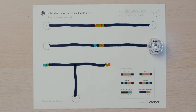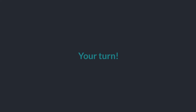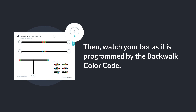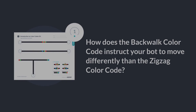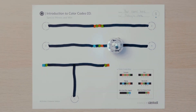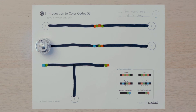You are ready for the final special move. Put your bot on start number four and observe how it uses its line sensor to follow the pathway and its color sensor to process the back walk color code. Then watch your bot as it is programmed by the back walk color code. How does the back walk color code instruct your bot to move differently than the zigzag color code? When you program your bot using the back walk color code, it should have turned around and moved in a zigzag motion backward. It is important to remember that when you use the back walk or the zigzag color code, your bot needs about three inches of black line after the colored sequence to complete the action correctly.